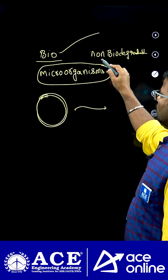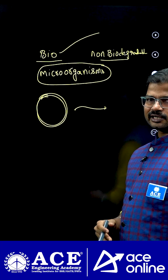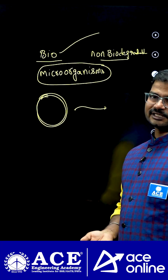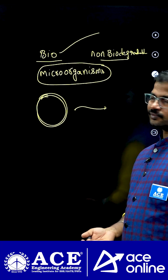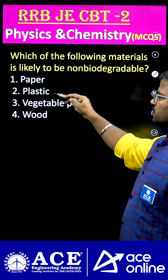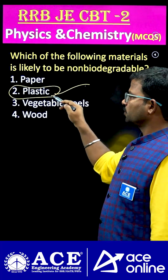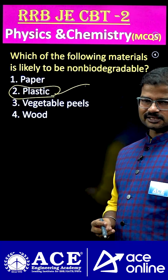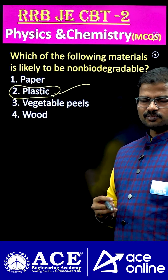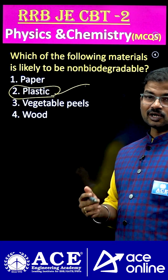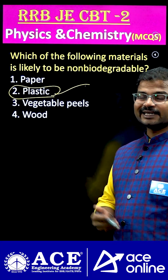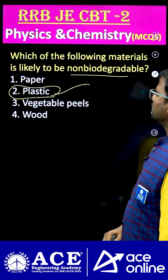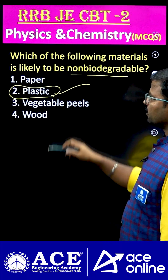Non-biodegradable means it does not get degraded into the soil, even in the presence of microorganisms. The best example here is plastic. Plastic is a polymer, so most plastic materials are not easily degraded into the soil, and due to that it is considered a non-biodegradable material.